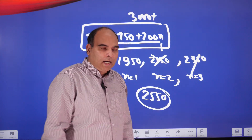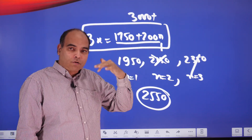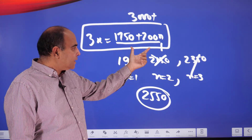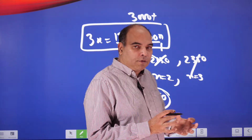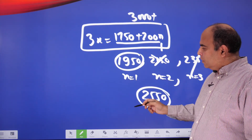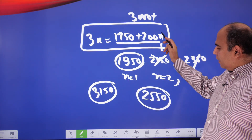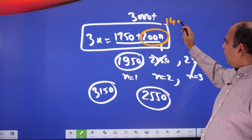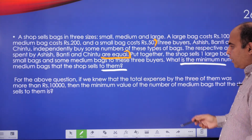Since 3x and 1750 + 200n are both arithmetic progressions, these two progressions meet at every interval of 600 — the LCM of 200 and 3. The valid totals are 1950, 2550, 3150, and so on. The total expenditure must be 3150, for which 200n must equal 1400, meaning n equals 7. That is the solution: the minimum number of medium bags is 7.